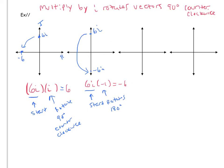And how about the next example? Let's say we wanted to do negative 6i times i. We could say that we are starting at negative 6i. And we are being rotated 90 degrees counterclockwise. So negative 6i is here.